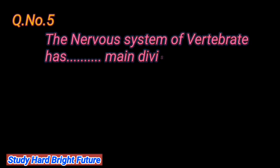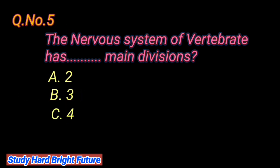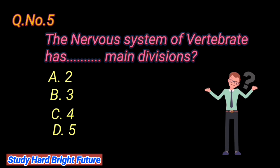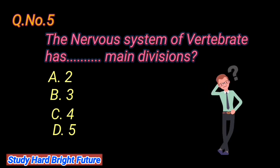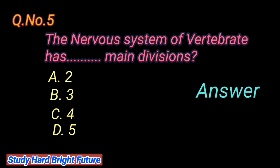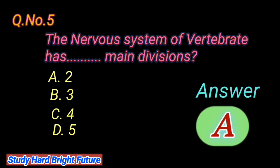Question number 5: The nervous system of vertebrates has how many main divisions. A. 2, B. 3, C. 4, D. 5. The right answer is A. 2.